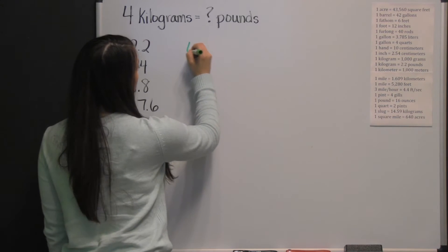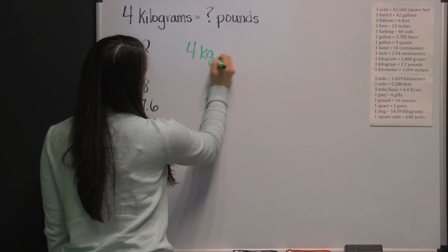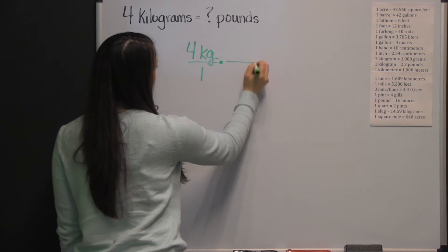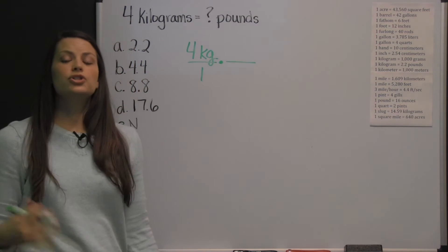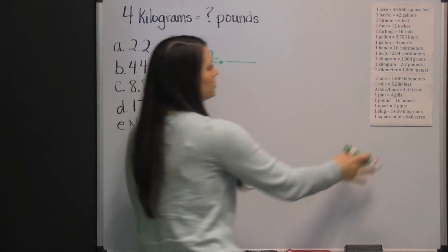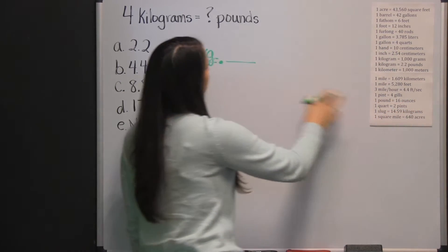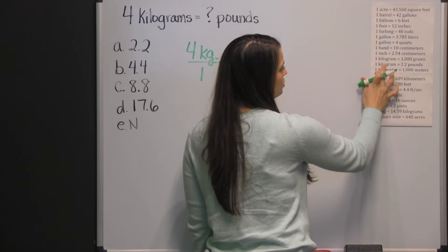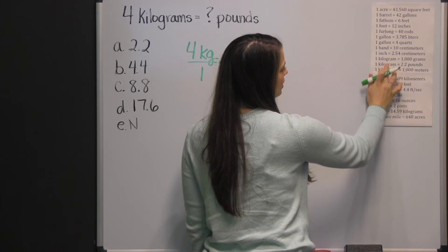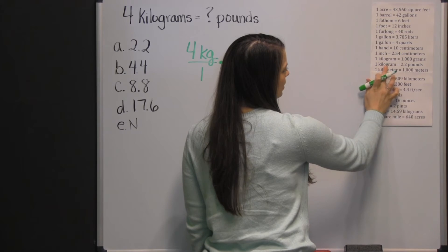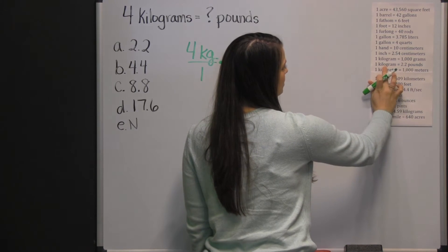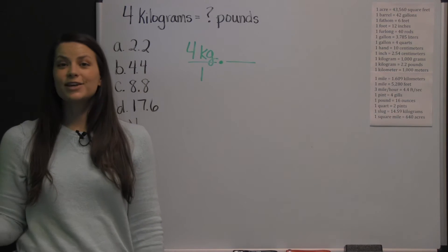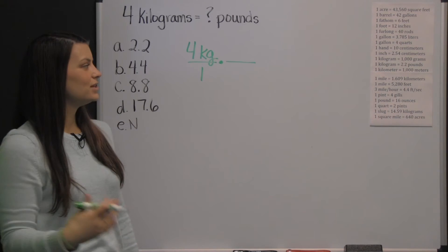We start with our 4 kilograms, put that over 1, and then we're going to multiply it times a conversion factor. Look in your list of conversions for kilograms and/or pounds. We have two different conversions that deal with kilograms, and this conversion deals specifically with kilograms to pounds, so that's the conversion factor we're going to use here.